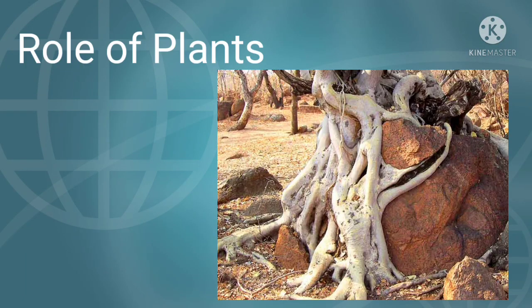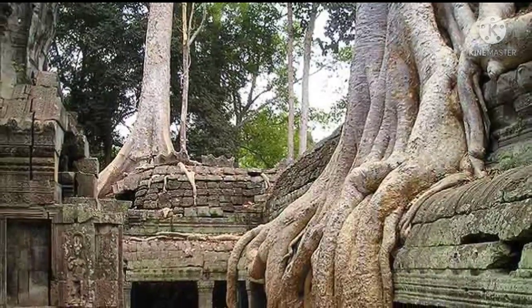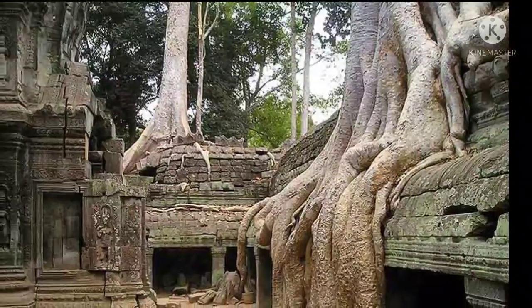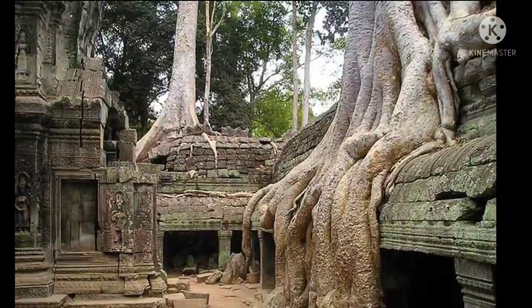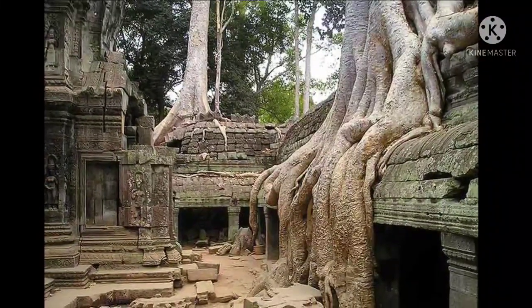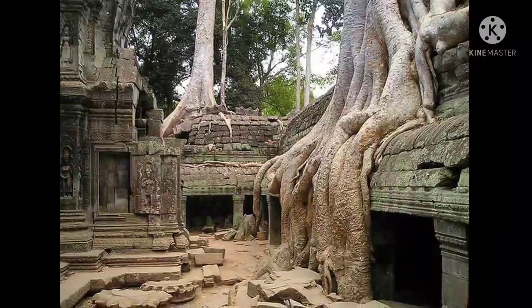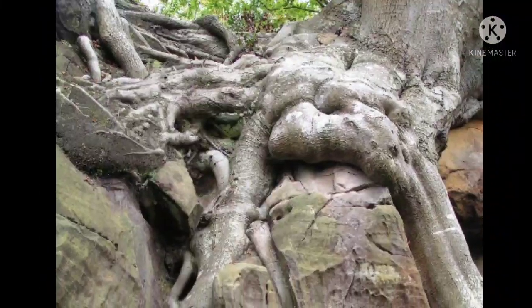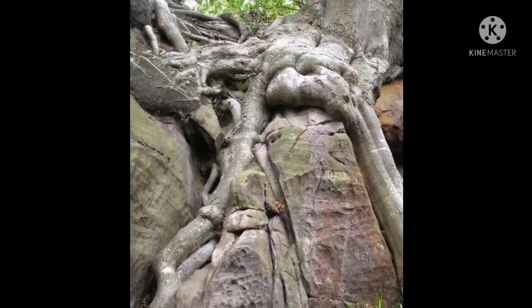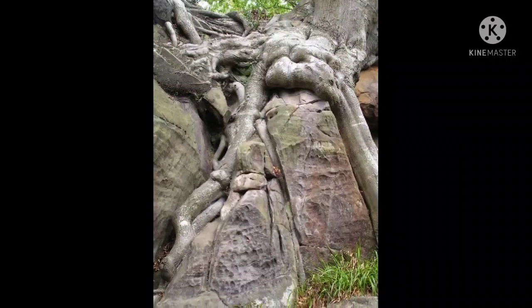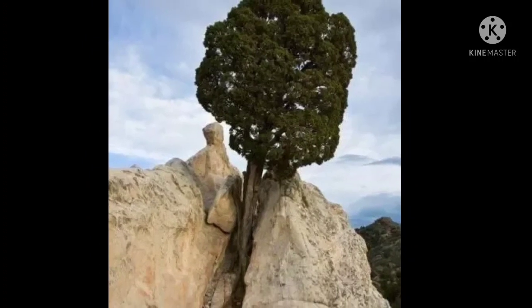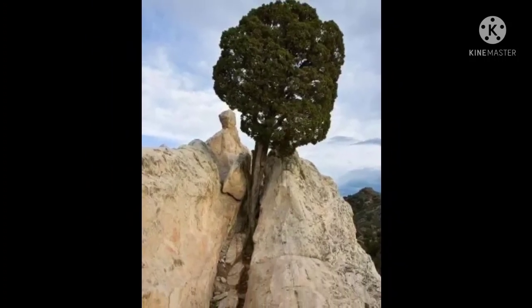Plants also play a very important role in the weathering of rocks. Rocks have joints or cracks, and rainwater is stored in these joints. Roots of small plants enter into these cracks in search of water and support. As the plant grows, the roots become thicker, the joints become wider, and the rocks are gradually disintegrated. This is also an example of biological weathering.